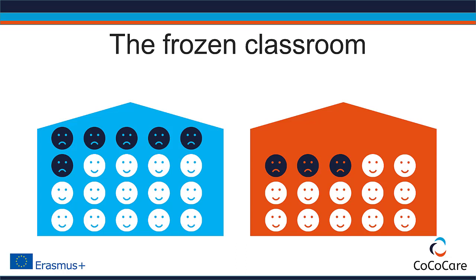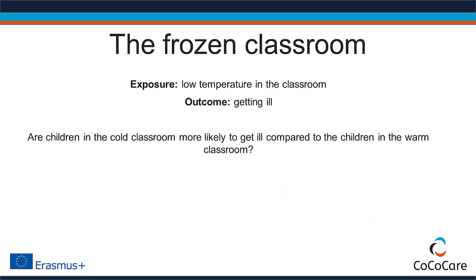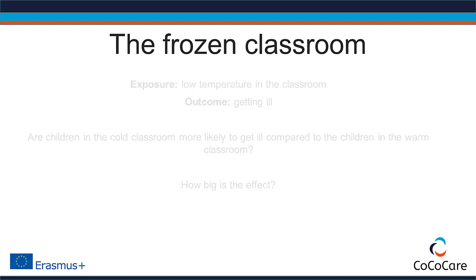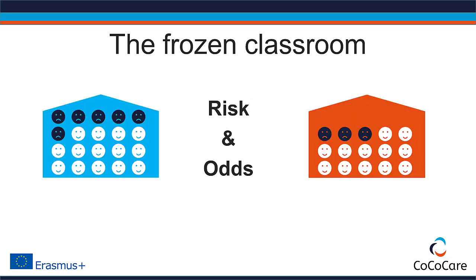In our example, the exposure would be low temperature in the classroom, and the outcome would be getting ill. What we want to know is: are children in the cold classroom more likely to get ill compared to the children in the warm classroom? And if that's the case, how big is the effect? Therefore, we compare the risk and the odds for getting ill in the exposed and the unexposed children. To describe the effect, we have different tools at hand.